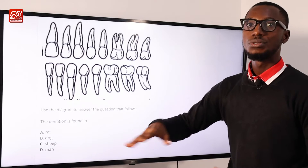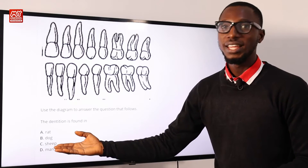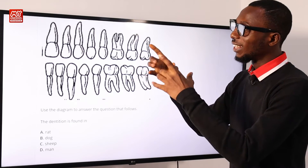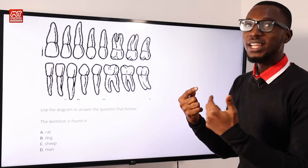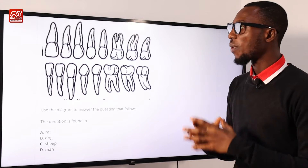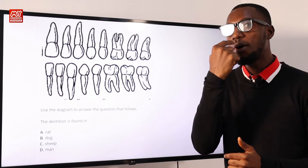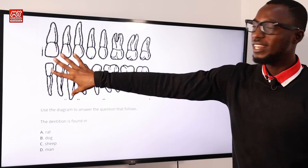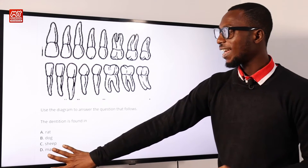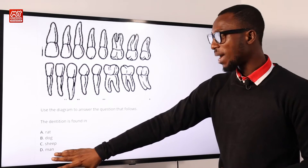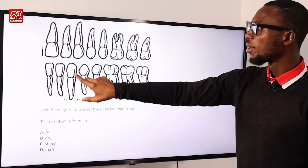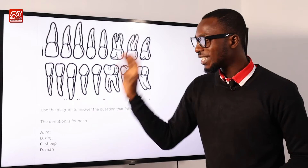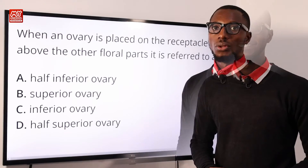Sheep is an herbivore, so the canine is absent, and the incisors are protruded differently. On the upper jaw of a sheep, the incisors are absent. So this is definitely not for sheep. The correct answer is man: two incisors, one canine, two premolars, and three molars. The correct option is D for man.